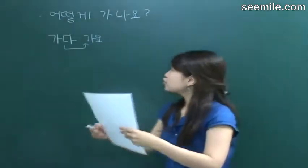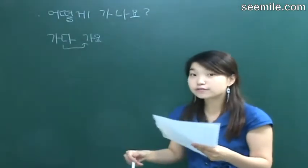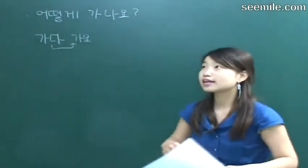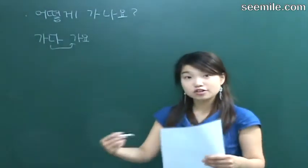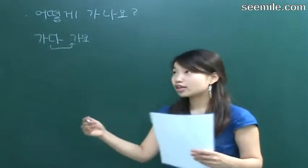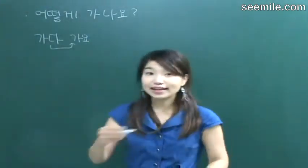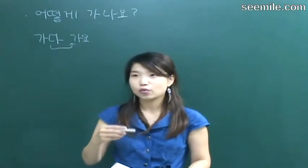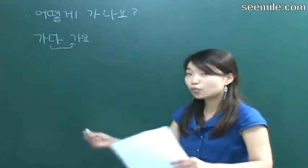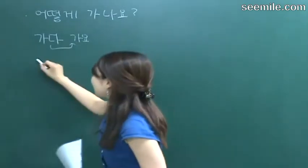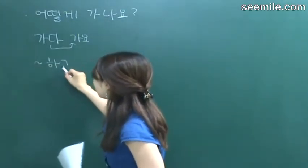What I want to do is explain the words first — vocabulary first — and then practice the conversation. Let's prepare. Look at the word. 원하다. What does 원하다 mean? I want to do something — want to. So 원하다 means I want to do something.